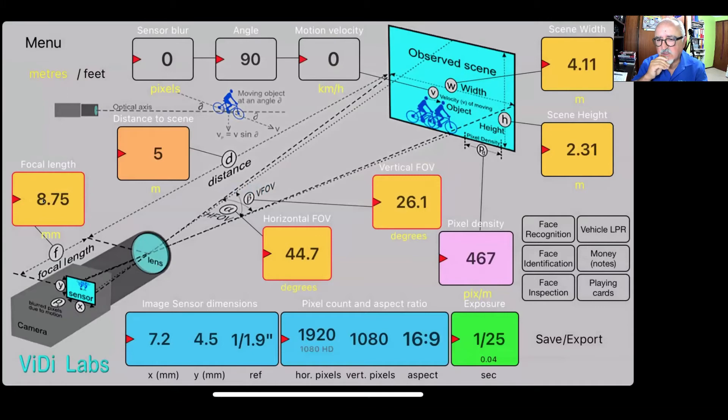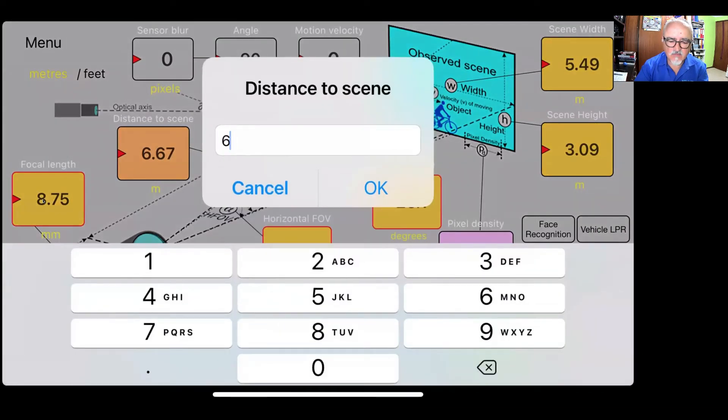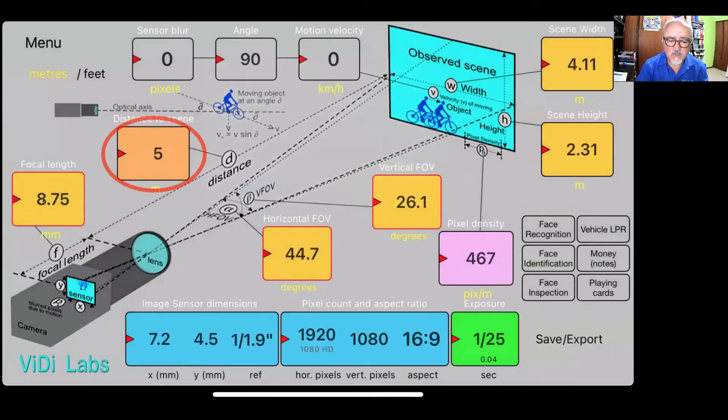So what now we said is that we calculated that we need to have 461 pixels per meter. But before we change this, if we change now the actual pixel density to anything we want, only the distance changes because that is not locked. So what we need to do is we need to lock the actual distance once we set it to where the camera will be installed. So double clicking on the distance, enter it five. Now hold one second and lock it.